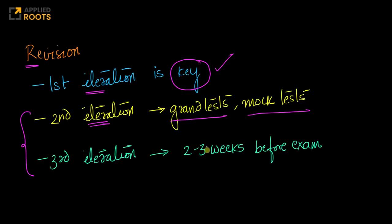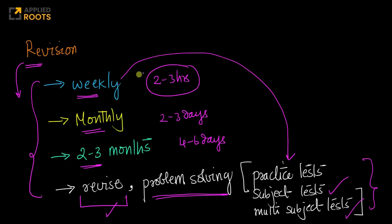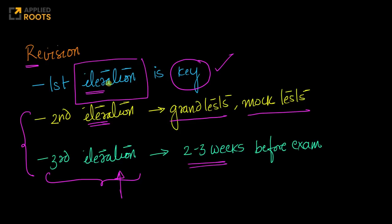The third iteration is typically the last two to three weeks before the examination, where you revise all your notes thoroughly. If time permits, solve a few problems; otherwise, you can skip the questions and primarily focus on having the right mindset and revising everything once. If you do your first iteration properly — going through each subject with the weekly, monthly, and quarterly revision strategy — everything will fall in place. The second iteration will improve your performance, and the third iteration is basically revising everything before the examination.